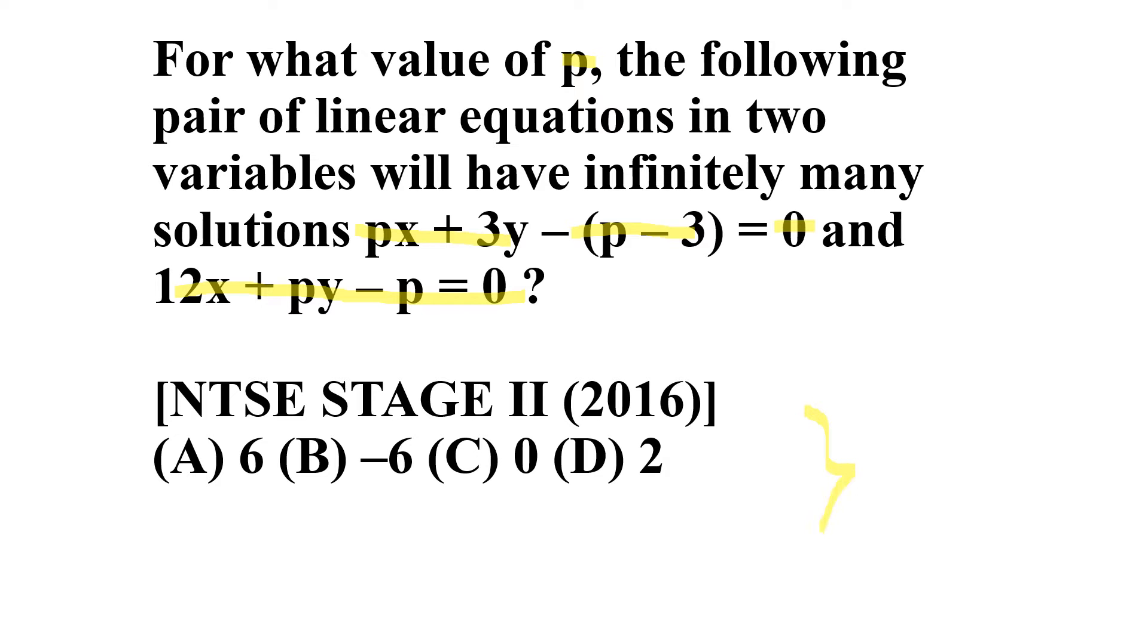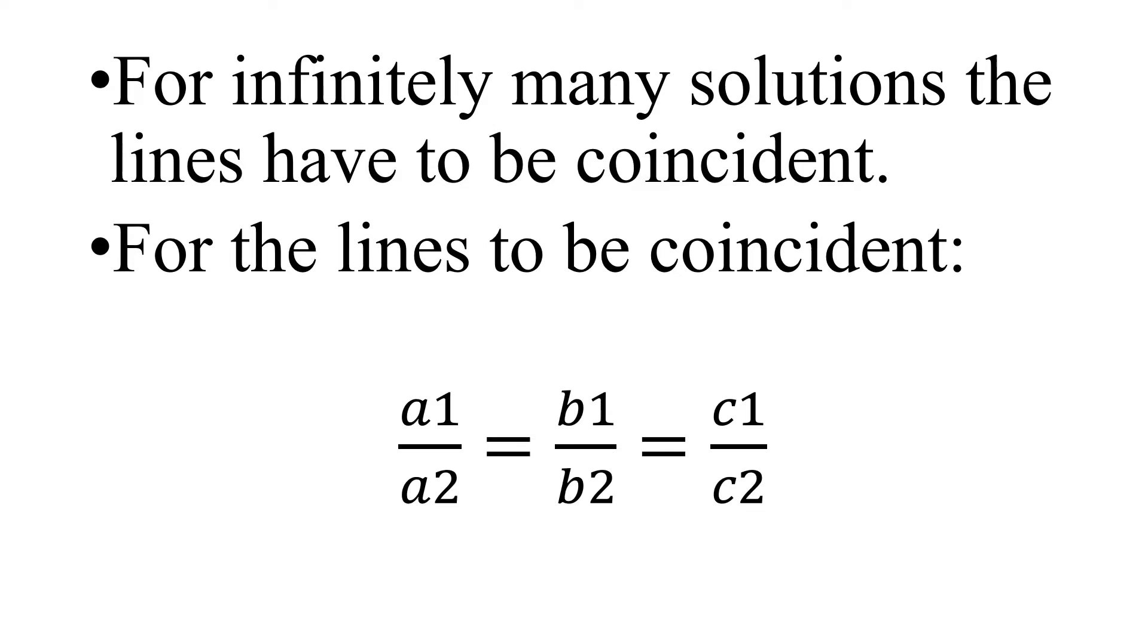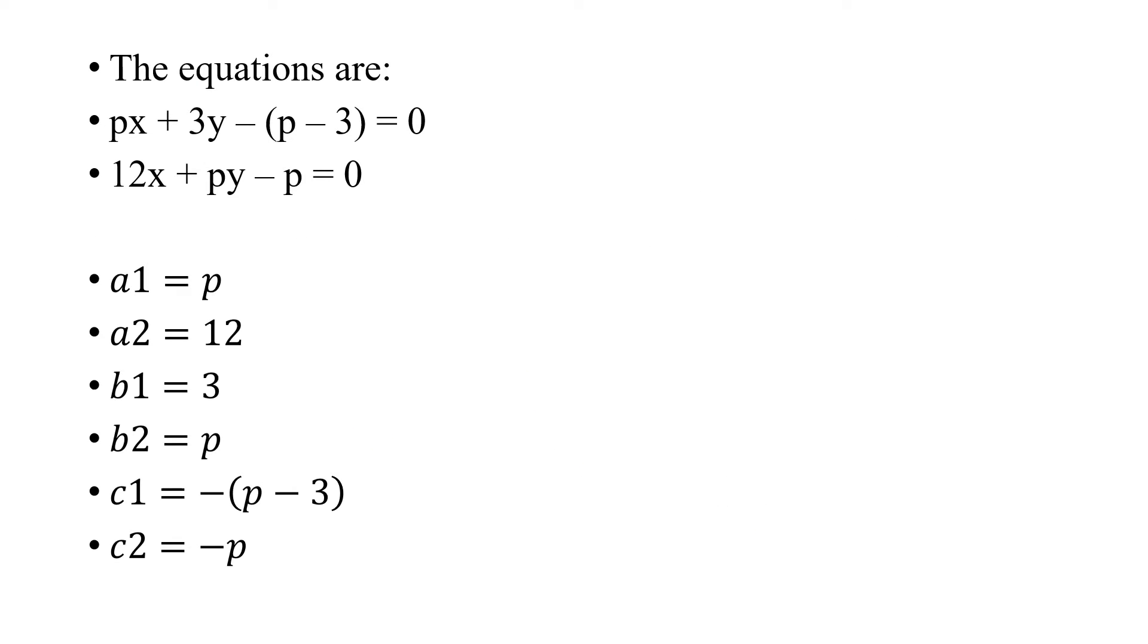We have been given some options. For infinitely many solutions, the lines have to be coincident. Only when both lines are coincident will there be infinitely many solutions. For the lines to be coincident, a1/a2 has to equal b1/b2 which equals c1/c2.